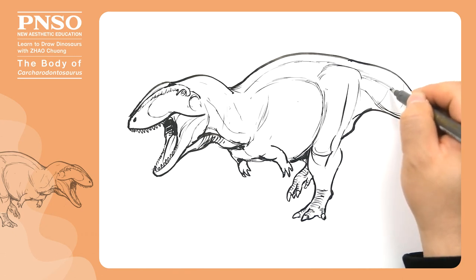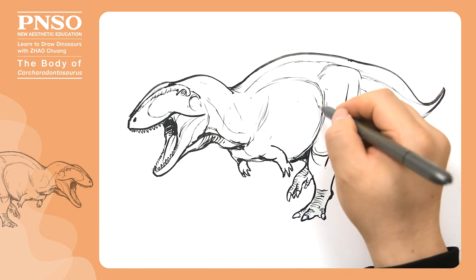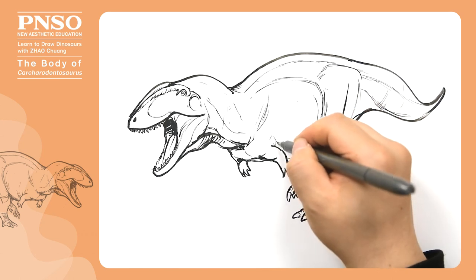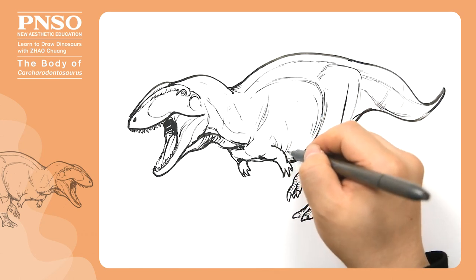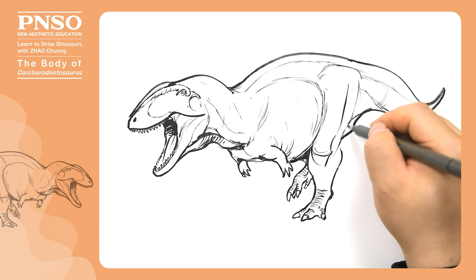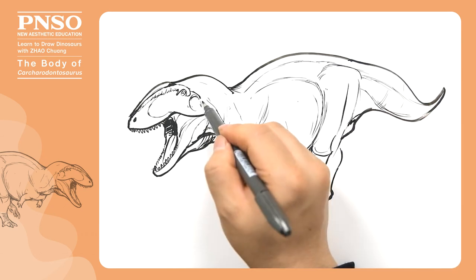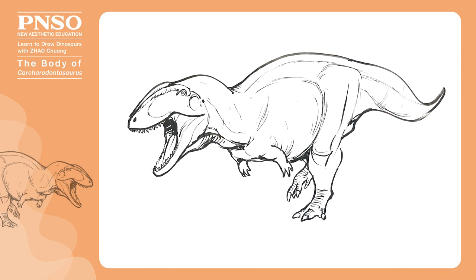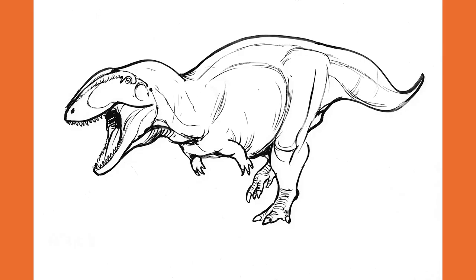Lastly, let's draw some folds on its body and draw its ear. Good, like this we've finished drawing the body of Carcharodontosaurus.